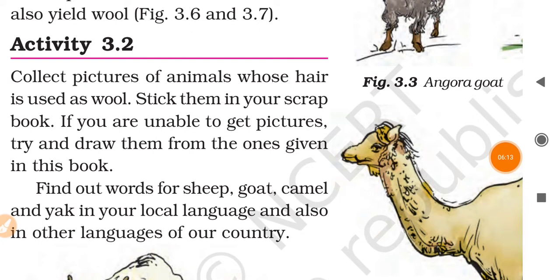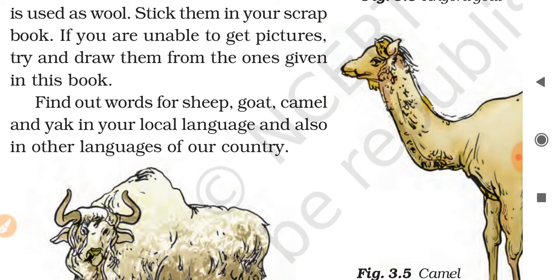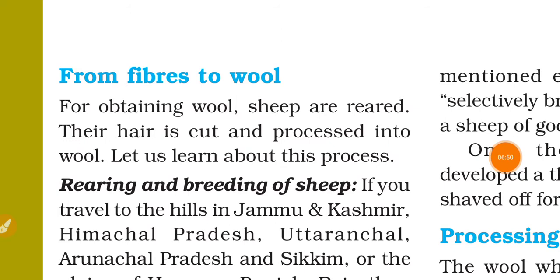Activity: Collect pictures of animals whose hair is used as wool and stick them in your scrapbook. If you are unable to get pictures, try to draw them from the ones given in the book. Also find out the words for sheep, goat, camel, and yak in your local language and other languages of our country.